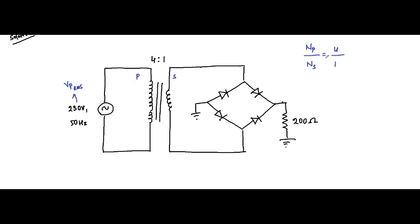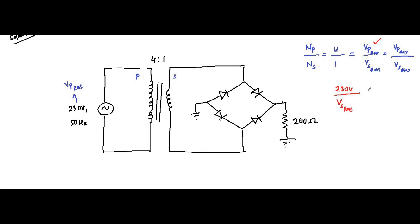The primary and secondary voltages are related to the turns ratio. We can write it as VP_RMS by VS_RMS, or equivalently as VP_max by VS_max. Since we are given the RMS voltage, we will use that. So we write: 230 volts by VS_RMS is equal to 4 by 1.